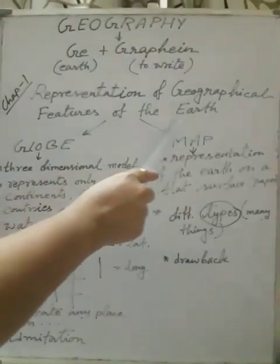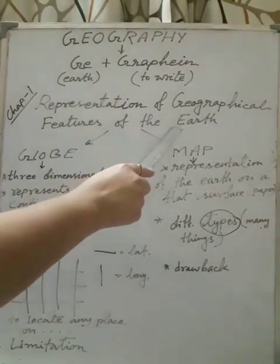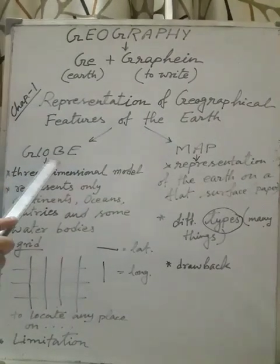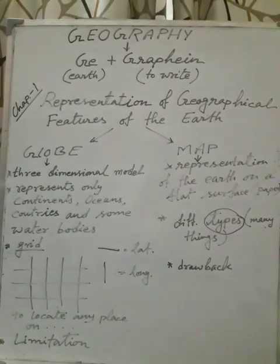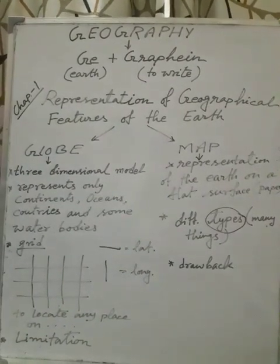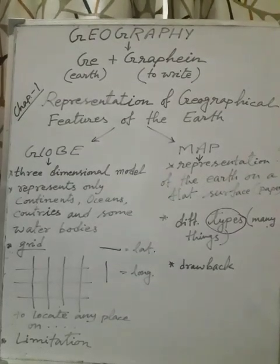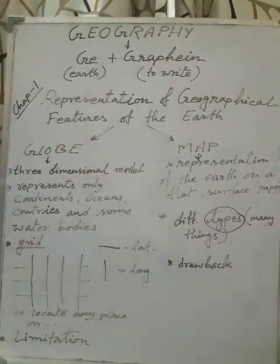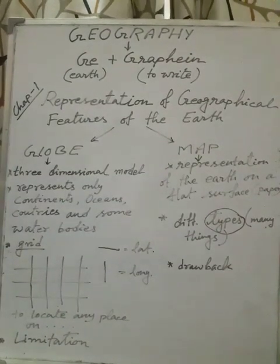That's why today our first chapter, Chapter 1, is 'Representation of Geographical Features of the Earth.' We can represent all features of the earth, but the question is — how? With the help of a globe and with the help of a map. Many features are present on the earth, their locations vary, and all this information we can gather with the help of either a globe or a map.